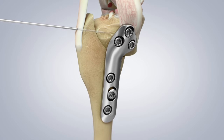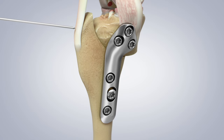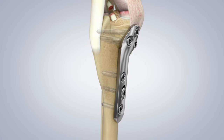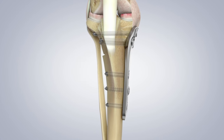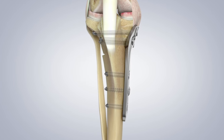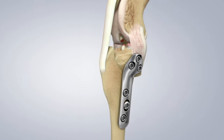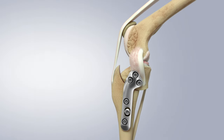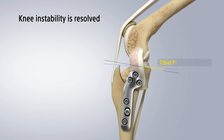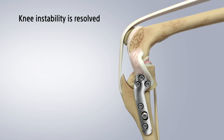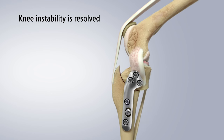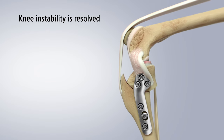Once applied, the anti-rotational pin can be removed. It is normal for the screws to stick out slightly from the bone. This new tibial plateau angle of around 5 degrees or less allows for stability of the knee to be achieved. Now, as forces go through the dog knee, there is no longer cranial tibial thrust.